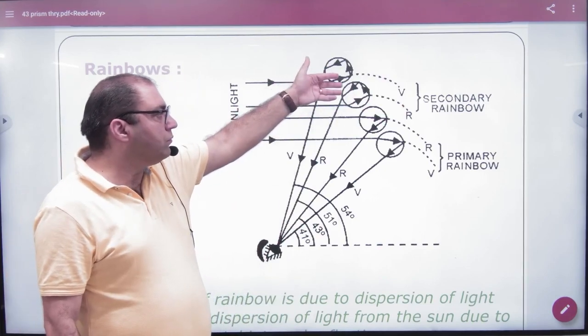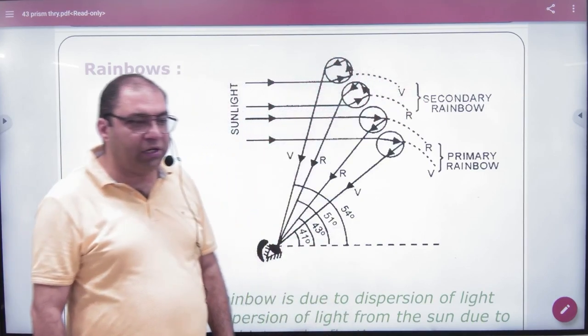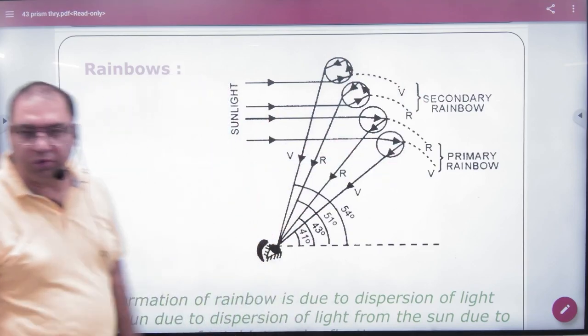So the upper rainbow is the secondary rainbow and the lower rainbow is the primary rainbow. That's enough.